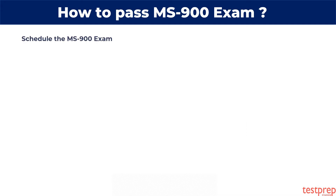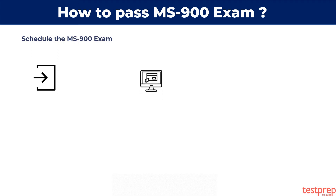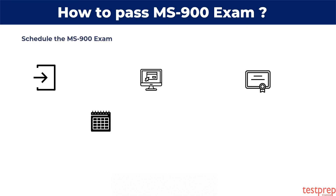To schedule the MS-900 exam: Firstly, go to the Microsoft portal and register yourself. Further, schedule your exam by clicking on the Schedule Exam link. On the next page, fill in all your details. After that, you can select the exam delivery option on the Pearson VUE page. Lastly, pay the exam fees and your registration is all set.